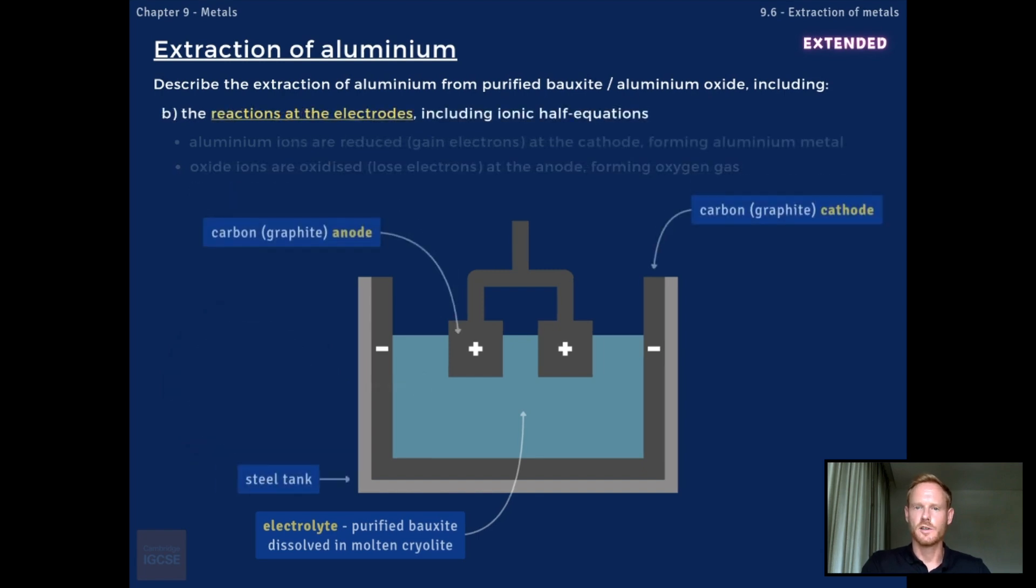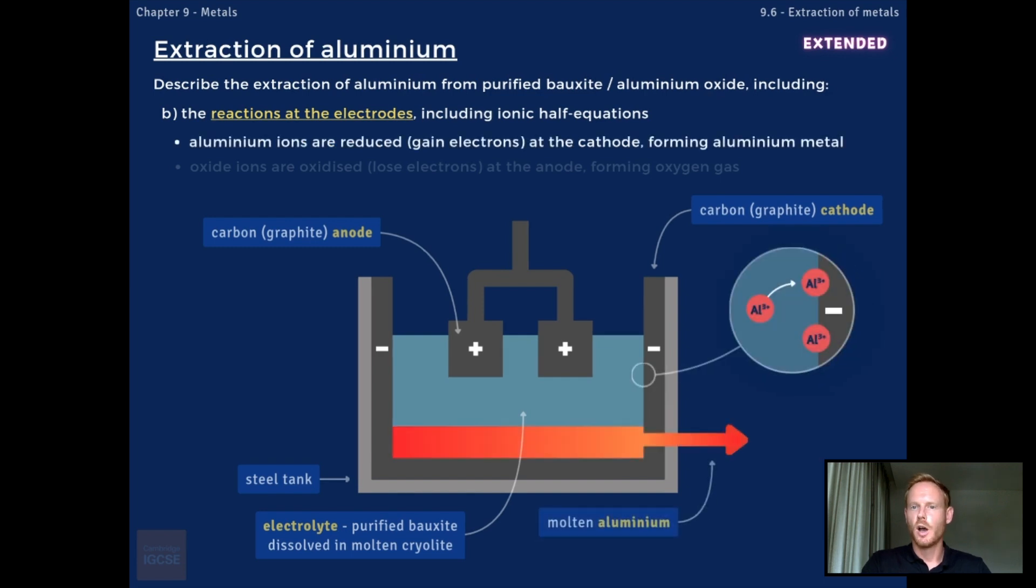The electrolysis of aluminium oxide is carried out in a steel tank using carbon or graphite electrodes. The anodes are carbon blocks, which are lowered into the molten electrolyte, and the cathode is the lining of the tank. At the cathode, positive aluminium ions are reduced, forming pure molten aluminium, which collects at the bottom of the tank and can be siphoned off. The ionic half equation for this reaction shows that each aluminium ion gains three electrons to form a neutral aluminium atom.